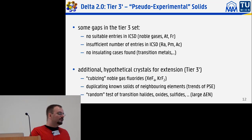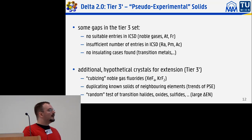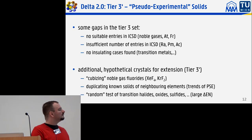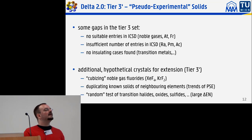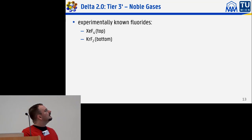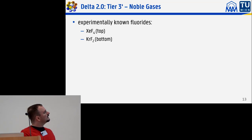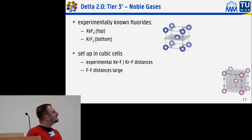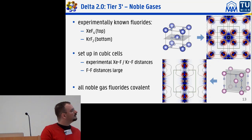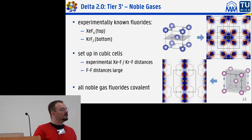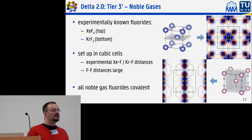The goal is to have at least four different cases for every element. Main group elements are essentially done, though noble gases will naturally have only two cases. For the transition metals this is still underway. The cubized noble gas compounds — XeF₄ and KrF₂ in cubic cells — give mostly covalent-looking electronic density differences, and most of them turn out to be conducting with only two or three showing a band gap.